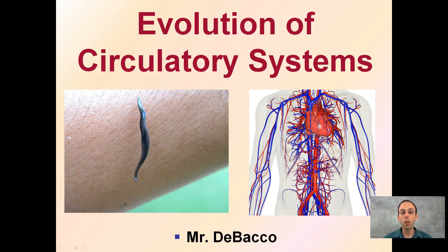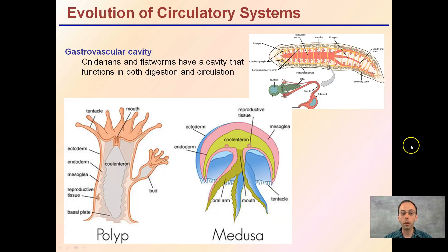Here we're going to look at the evolution of circulatory systems. We're going to go from a very basic system, essentially like a flatworm, to a very complex system like our own.